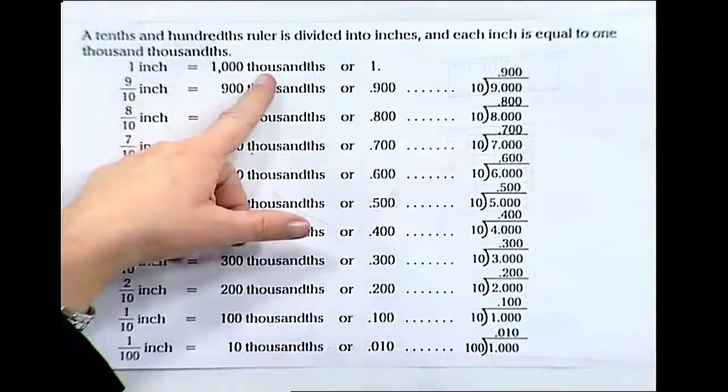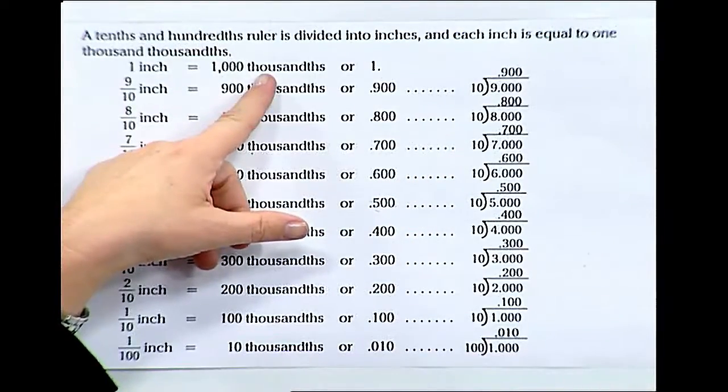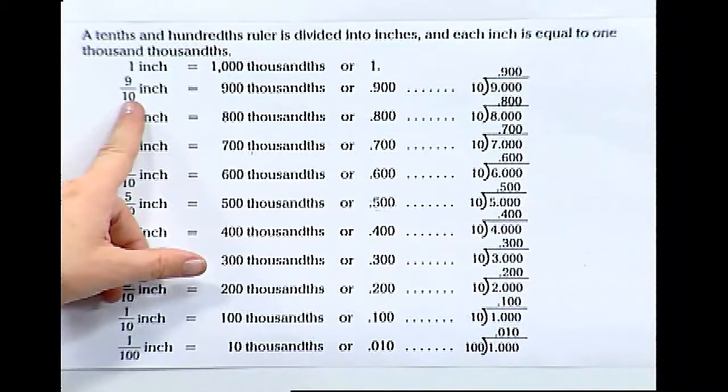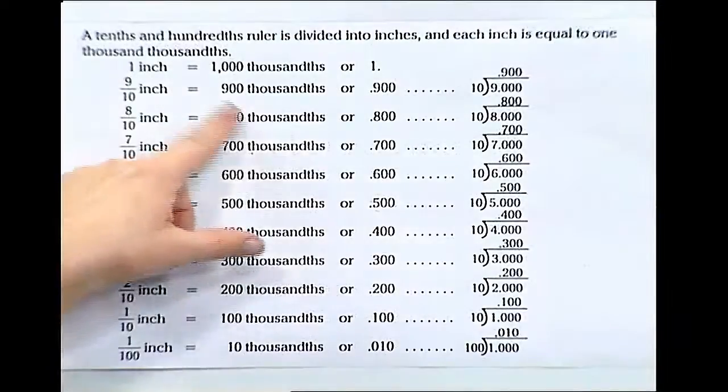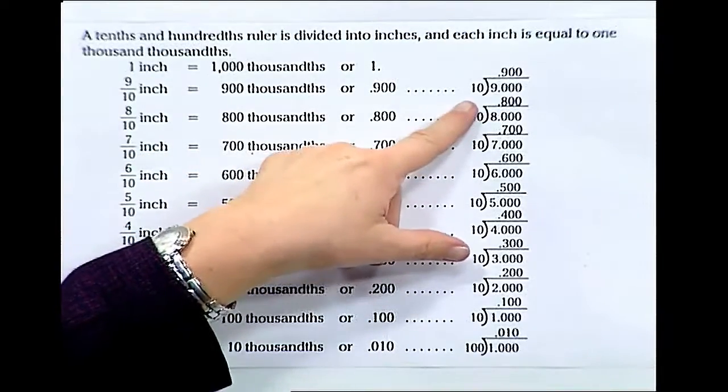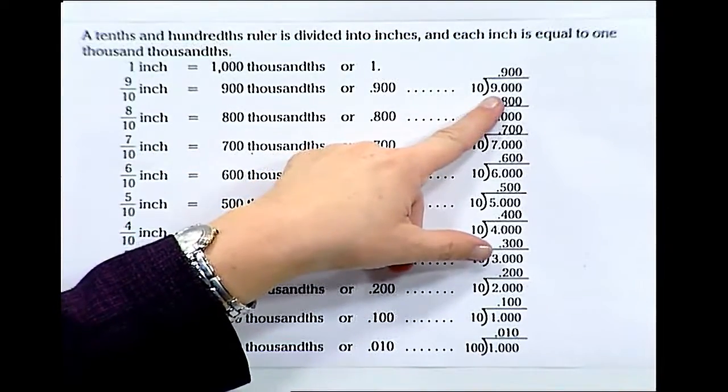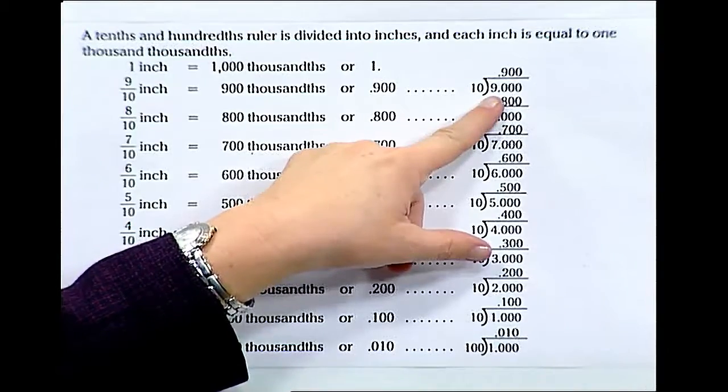An inch has one thousand thousandths for each inch. If we look at nine tenths of an inch, we're looking at nine hundred thousandths. We can find that out by dividing ten into nine, which is point nine zero zero or nine hundred thousandths.